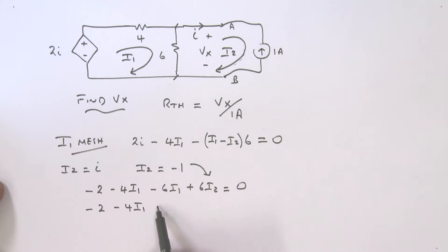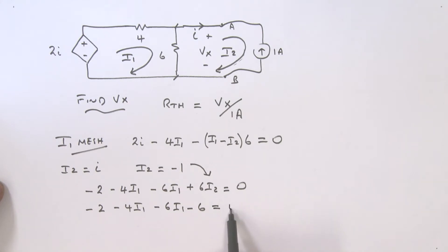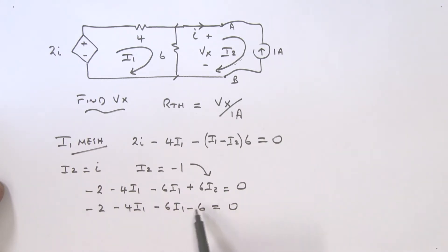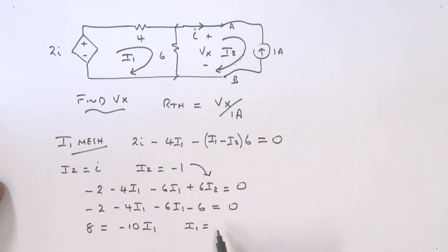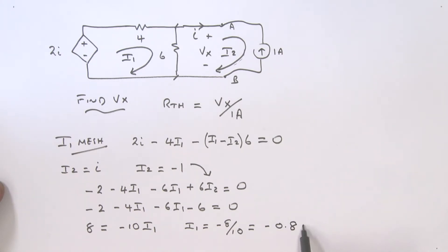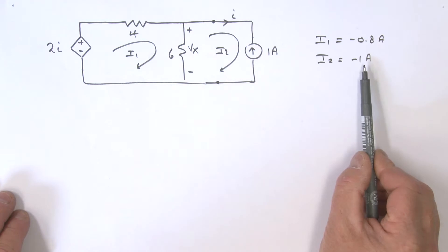Collecting terms: minus 2 and minus 6 give minus 8 on the left, which moves to the right as positive 8. The I1 terms give minus 10·I1. So 8 equals minus 10·I1, therefore I1 equals minus 8 divided by 10, which equals minus 0.8 amps.